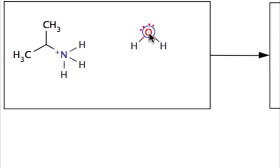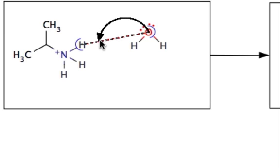Step two: start moving this cursor towards the proton that it's going to pick up. In this particular case, we're picking up one of those hydrogens coming off of the positive nitrogen. As you move closer and closer to one of those protons, you'll notice a point — maybe about 80% of the way to that particular atom — where you see a dashed line between those two atoms. That dashed line indicates that a new single bond is going to be formed, based on your arrow, between those two atoms.